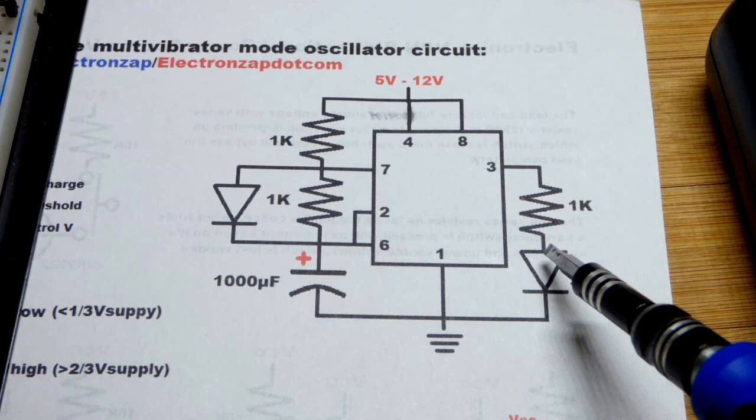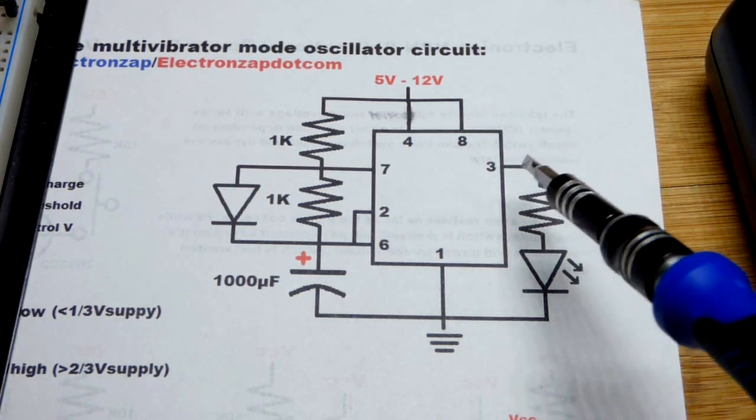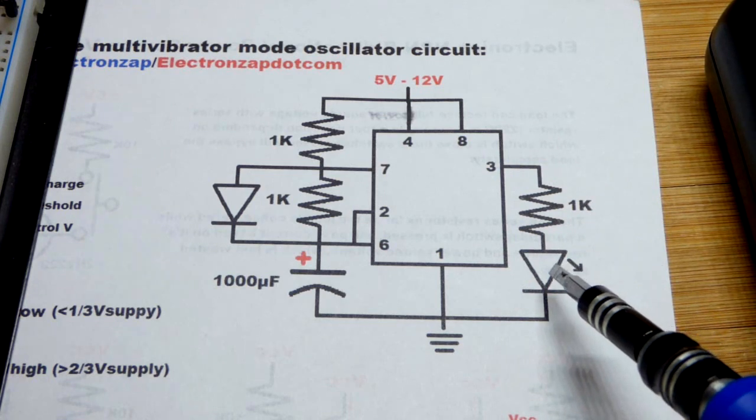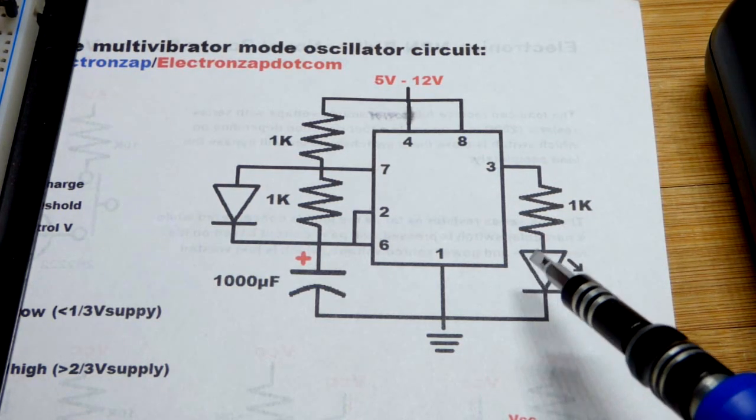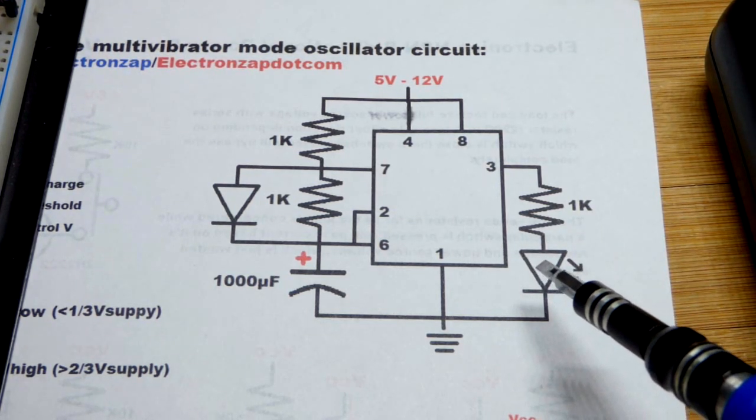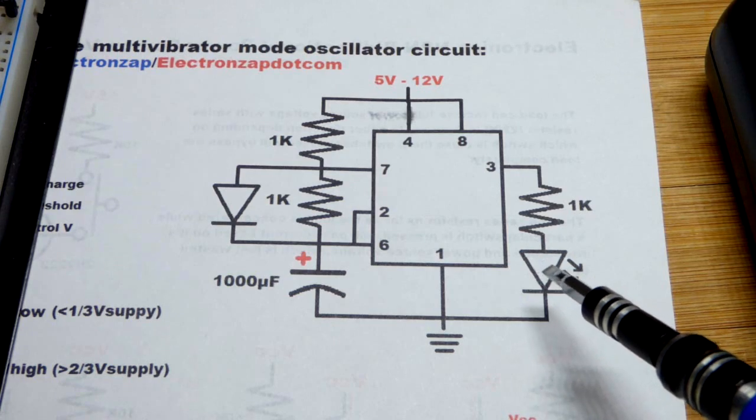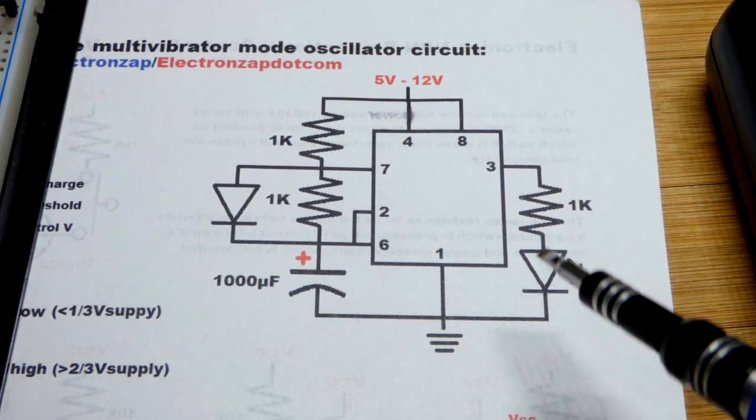What that means is we just have one LED here. We could also add another LED that comes from the positive supply, but the LED is going to flash on and off continuously. That's what astable means. It's not on or off until you do something, it just keeps bouncing back and forth.